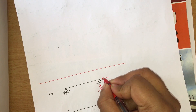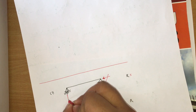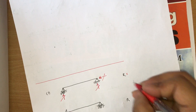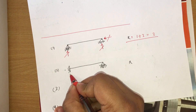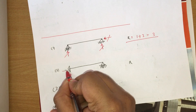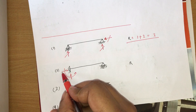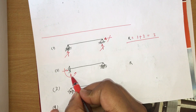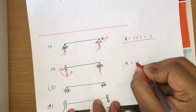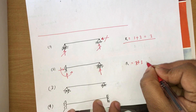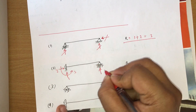For example one — roller gives one reaction, hinge gives two reactions — total is 1 + 2 = 3 reactions. For example two — fixed support gives three reactions and roller gives one more reaction — so 3 + 1 = 4 reactions total. We know the line of action but we need to calculate the direction.